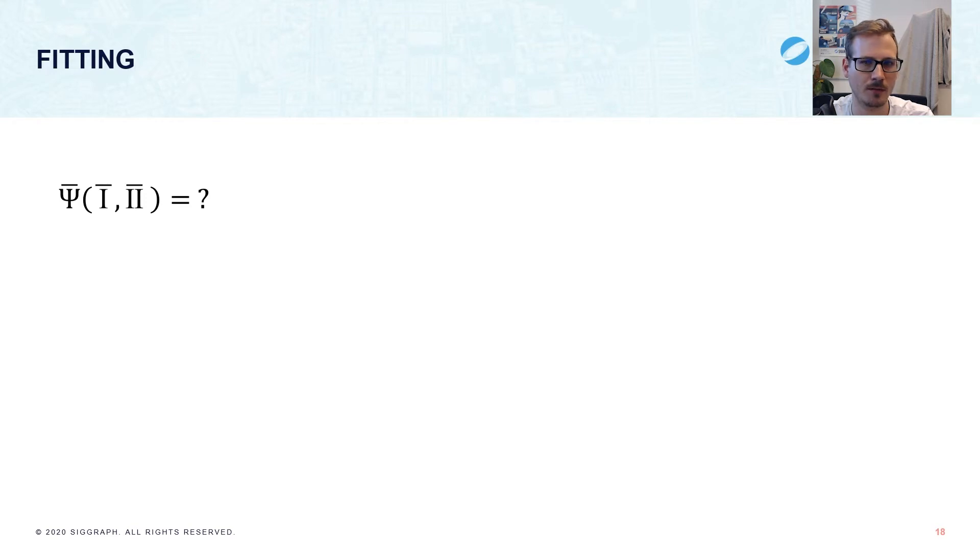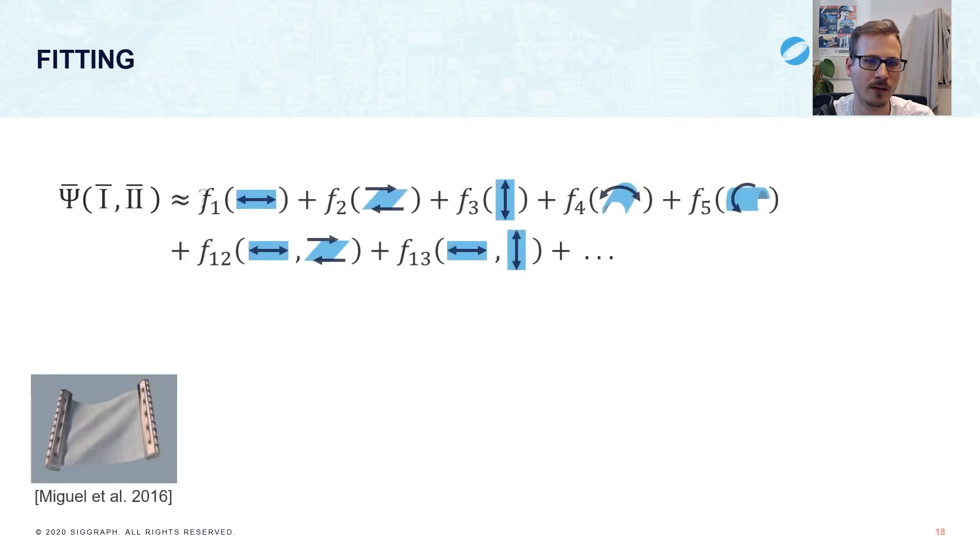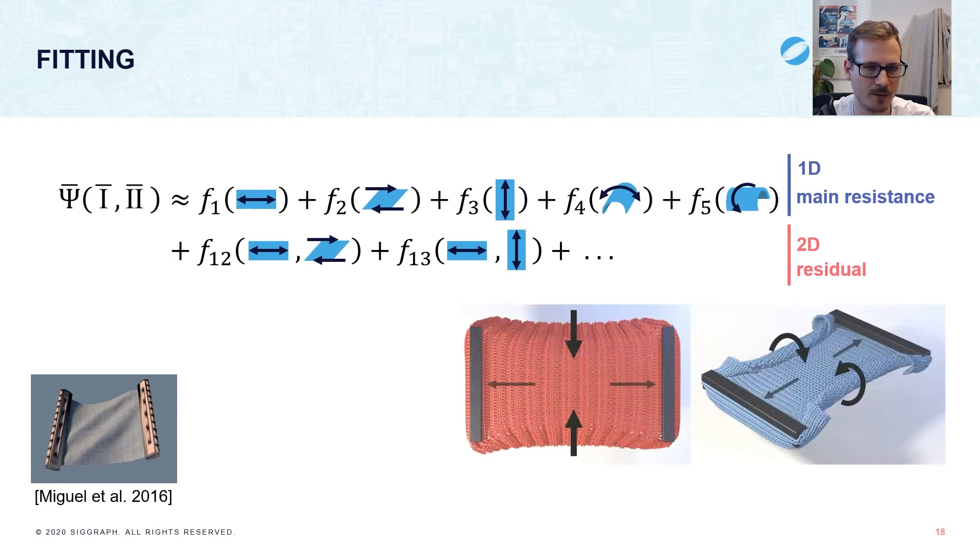The question is how to parametrize the model. To reproduce the distinct direction-dependent material behavior, it needs to appropriately approximate the energy for arbitrary deformations. Following the method of Miguel et al., we approximate the full material response by a sum of 1D and 2D terms. The 1D terms model the main resistance to a single deformation such as stretching, shearing or bending along a single direction. The 2D terms then model the residual, accounting for what is missing for two deformations at the same time. For example, area preservation or curling under tension would be modeled by the 2D terms.